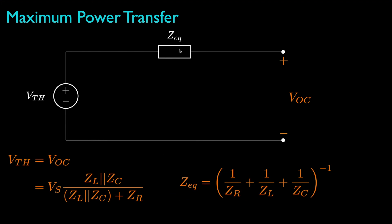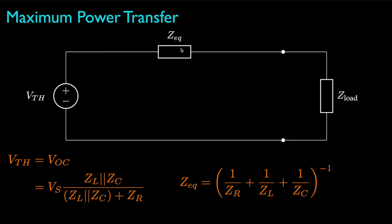The load impedance that maximizes power transfer can then be determined as the complex conjugate of the equivalent impedance, and the power transferred is the magnitude squared of the Thevenin voltage divided by eight times the resistance associated with the equivalent impedance.